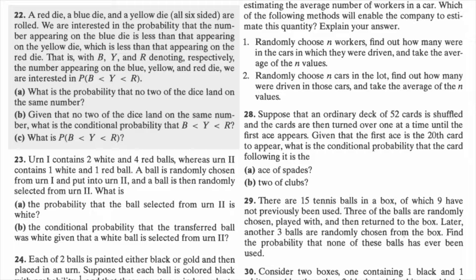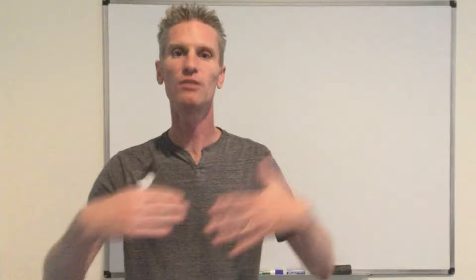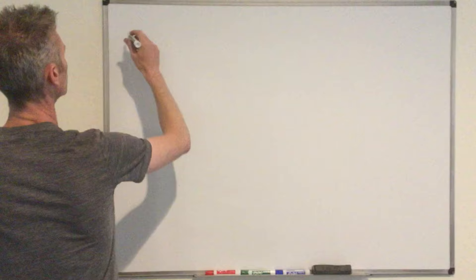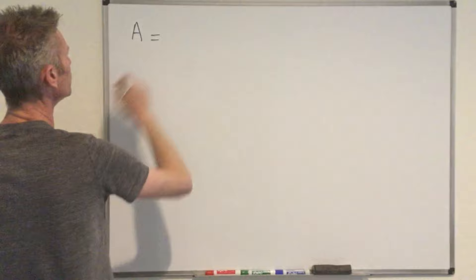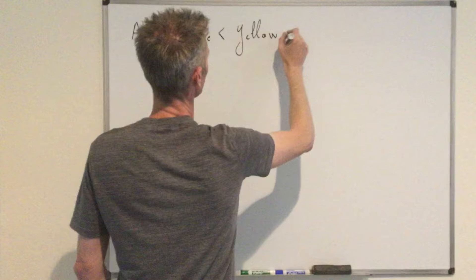Instead of following the book and all those different steps, I'm going to motivate the idea behind the conditioning. Basically, what the book tells you is answering some questions to lead you to the answer. I'm going to instead tell you why it makes sense to follow this pattern. So I'm going to write here the probability that we want to compute — that's the probability of the event that blue is strictly less than yellow and strictly less than red.